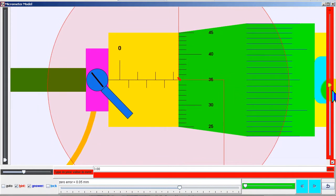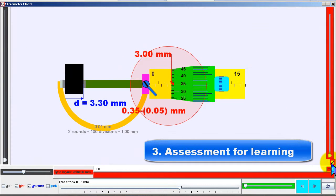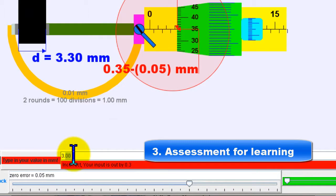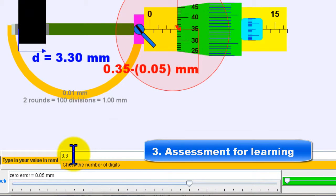The third design feature is assessment of learning through an input field. If the student gets the answer wrong, there will be feedback to guide them. If the answer is correct, they will receive appropriate positive feedback.